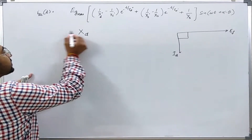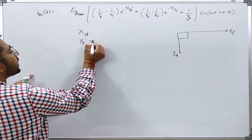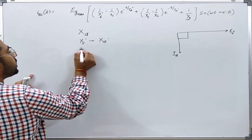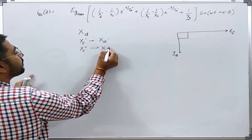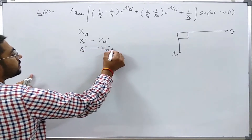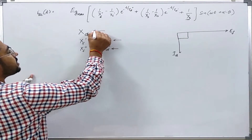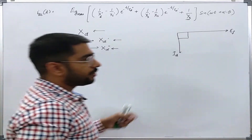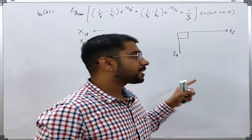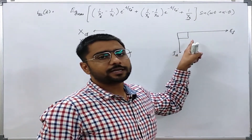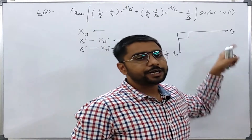XS will change to Xd, Xs' will change to Xd', and Xs'' will change to Xd''. That is, the sub-transient reactance, transient reactance, and the steady-state reactance are to be used for those currents which are about 90 degrees out of phase with the induced EMF.